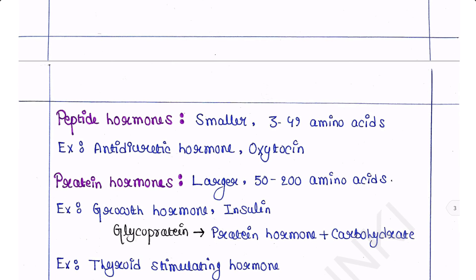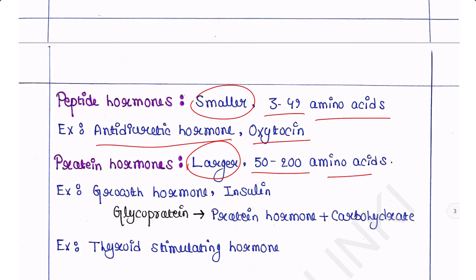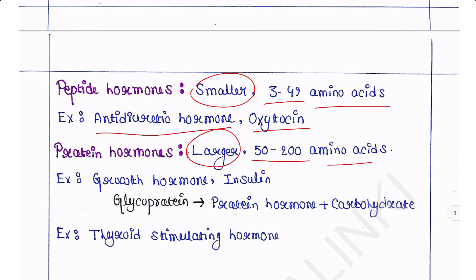Peptide hormones and protein hormones are amino acid polymers. Peptide hormones are smaller in size — they consist of chains of 3 to 49 amino acids. Protein hormones are larger in size, including 50 to 200 amino acids. Examples of peptide hormones are antidiuretic hormone and oxytocin. Examples of protein hormones are growth hormone and insulin.